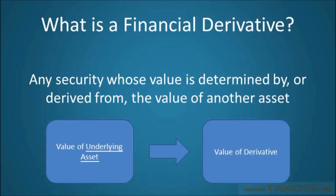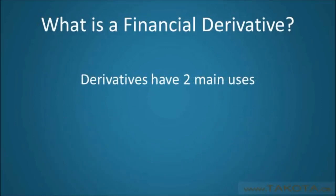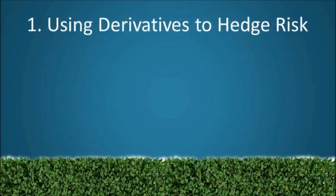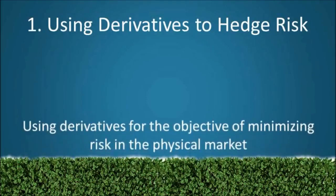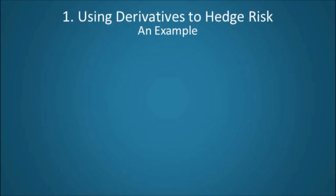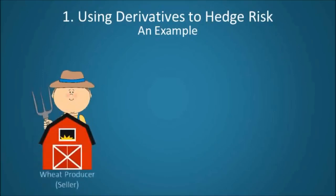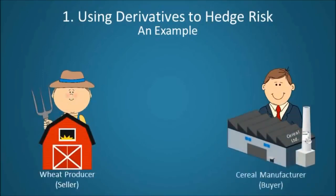This is all well and good, but what's the point of derivatives? Well, there are two main uses for derivatives. The first is to hedge risk. Derivative hedging generally refers to the practice of using derivatives for the objective of minimizing risk in the physical market. In order to demonstrate how a derivative can be used to hedge risk, consider the example of wheat producers and cereal manufacturers hedging their exposure to fluctuations in wheat prices. As we know, wheat is susceptible to significant fluctuations in price, owing to both supply and demand.